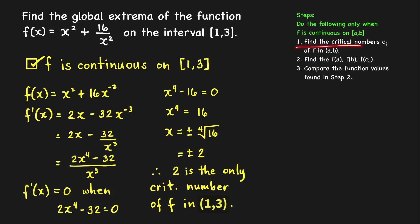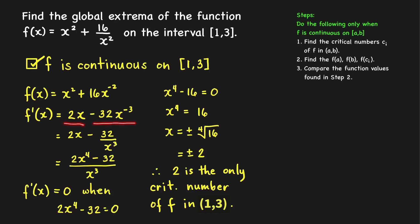Step 1: find the critical numbers of f in the open interval (1, 3). We compute the derivative by writing 16/x² as 16x⁻². The derivative is f′(x) = 2x − 32x⁻³, which can be written as (2x⁴ − 32) / x³. The derivative does not exist when x = 0, but x = 0 is not in the domain of f, so it cannot be a critical number.